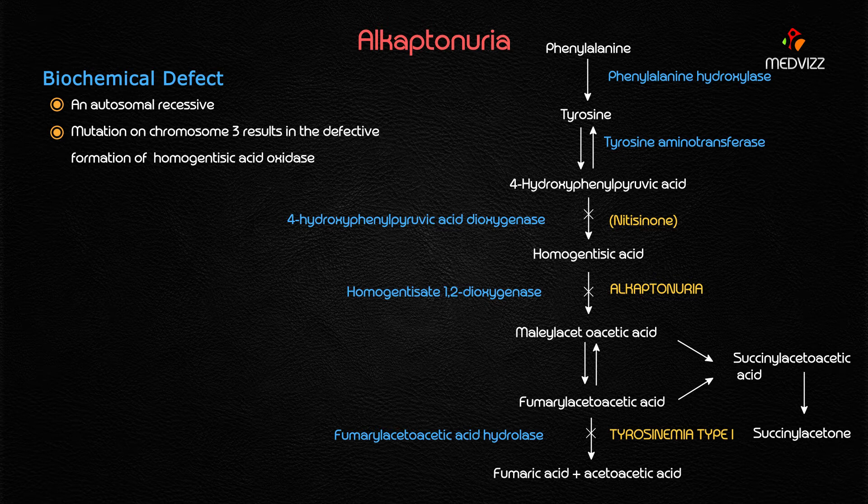Alkaptonuria is an autosomal recessive disorder associated with a mutation on chromosome number three — important to remember for your examination. The deficient enzyme in alkaptonuria is homogentisic acid oxidase.